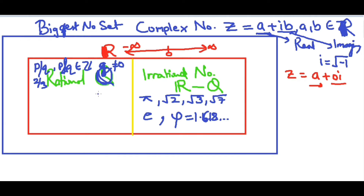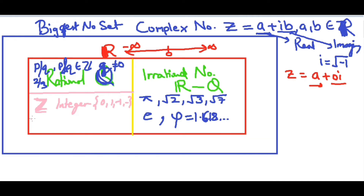Inside rational numbers we have integers. The notation for integers is Z, from the German word 'zahlen' which means number — that's why it's Z and not I. Integers go from 0, 1, -1, and so on. Inside integers we have whole numbers, which in set notation are {0, 1, 2, ...}. And inside integers and whole numbers we have natural numbers, denoted with N, which are {1, 2, 3, ...} going to infinity.